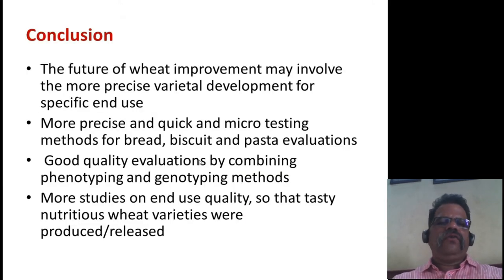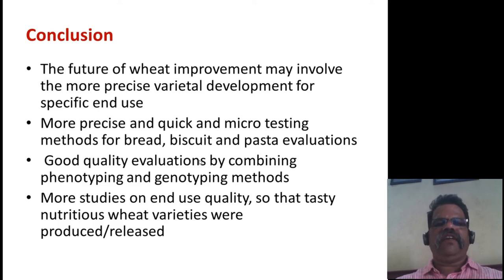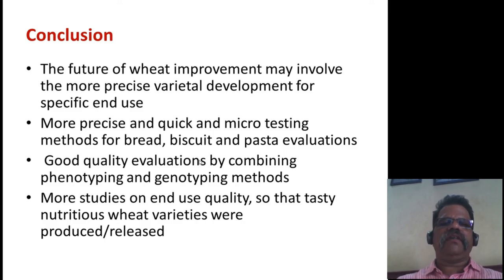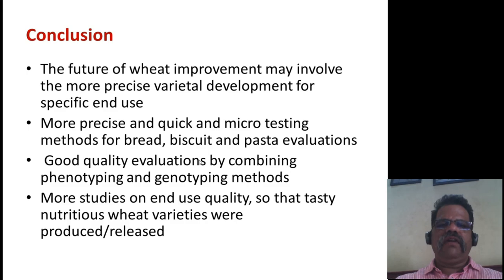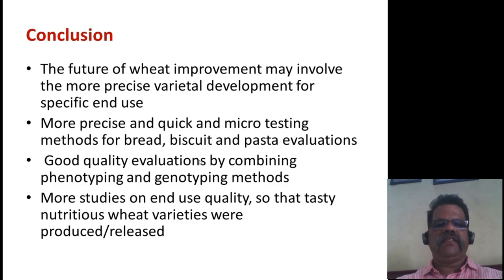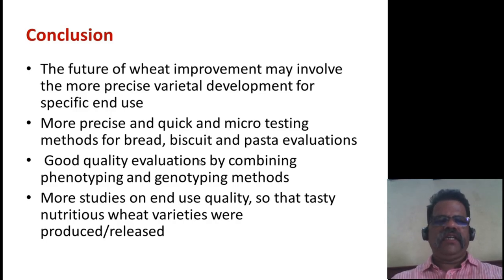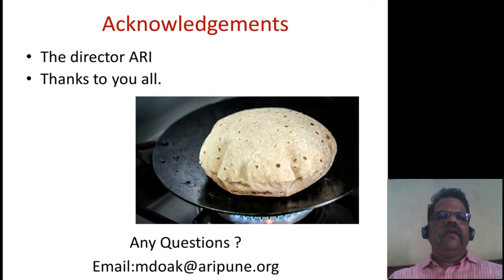In conclusion, the future of wheat improvement may involve more precise varietal development for specific end uses — like bread, noodles, or biscuits — along with more precise, quick, and micro testing methods for bread, biscuit, and pasta evaluations. Good quality evaluations should combine phenotyping and genotyping methods. More studies on end-use quality are needed so that tasty, nutritious wheat varieties can be produced.